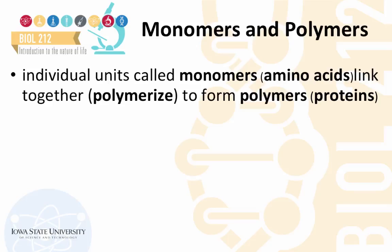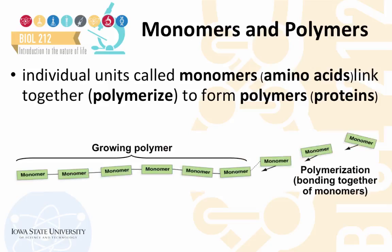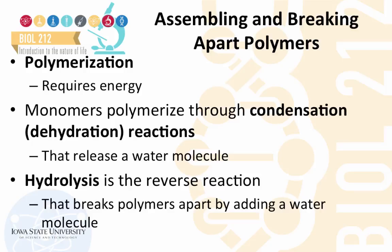Amino acids are individual units called monomers that can link together or polymerize to form higher order structures known as polymers. Polymerization of monomers requires energy. This reaction is known as a condensation or dehydration reaction — a water molecule is released when two monomers combine together. Hydrolysis is the reverse reaction, which breaks down polymers into their component monomeric units by adding a water molecule across a bond between two monomers.